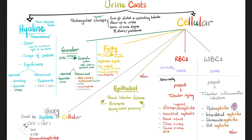Urine casts are rectangular clumps formed in the kidney — specifically in the distal tubule, collecting tubules, and collecting ducts — and show up in the urine, pointing to the kidney as the source. To see casts in the urine, there is likely some degree of stasis or proteinuria. The greater the stasis and proteinuria, the greater the likelihood of finding casts.